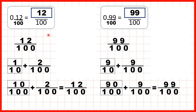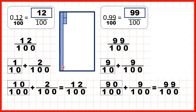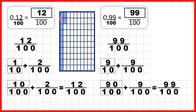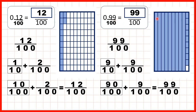To make it clear what's happening, we can show 0.12 as 1 tenth and 2 hundredths. But if we want to show that as a fraction with a denominator of 100, we can split our fraction bar into 100 pieces, and we can see that we have 12 pieces, because the 1 tenth is the same as 10 hundredths. And for 0.99, we can show 9 tenths and 9 hundredths. But if we split our fraction bar into 100 equal pieces, we can see that we have 99 pieces, because the 9 tenths is now 90 hundredths.